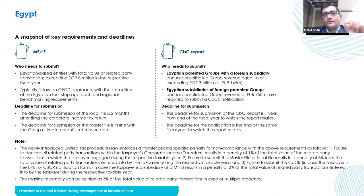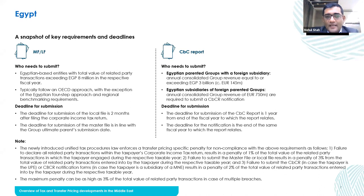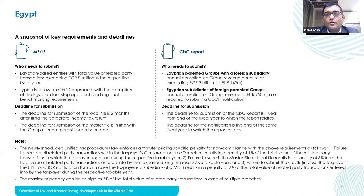On the CBCR, this is a typical requirement in terms of threshold. For inbound companies — those headquartered outside Egypt but having subsidiaries — the threshold is group revenue of 750 million euros, which is in line with the OECD. But for outbound companies — those headquartered in Egypt having subsidiaries outside — they have a much lower threshold of 3 billion Egyptian pounds, which is equivalent to approximately 145 million euros.